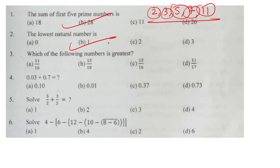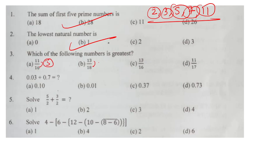Third question: which of the following numbers is greatest? For proper fractions, as the denominator increases the value decreases. Compare the differences — the average of 5 differences, 3 differences, and 6 differences. The value with 3 differences gives the greatest value, and that option is our correct answer.